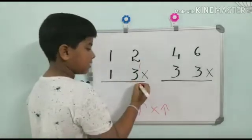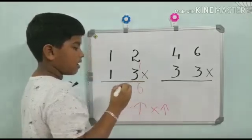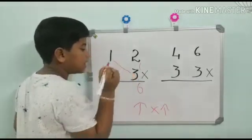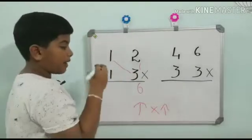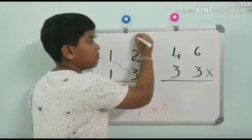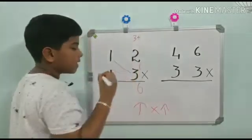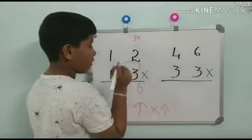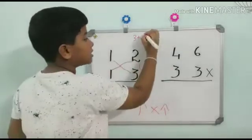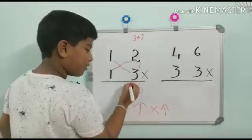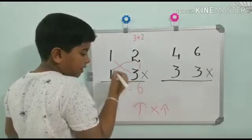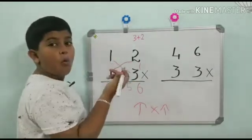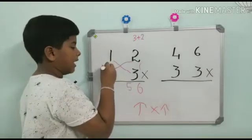6. And now crosswords, that is 1 into 3, 3 plus. And now again crosswords, that is 1 into 2, 2. 3 plus 2, 5. And to get the last part just multiply 1 into 1, that is 1.